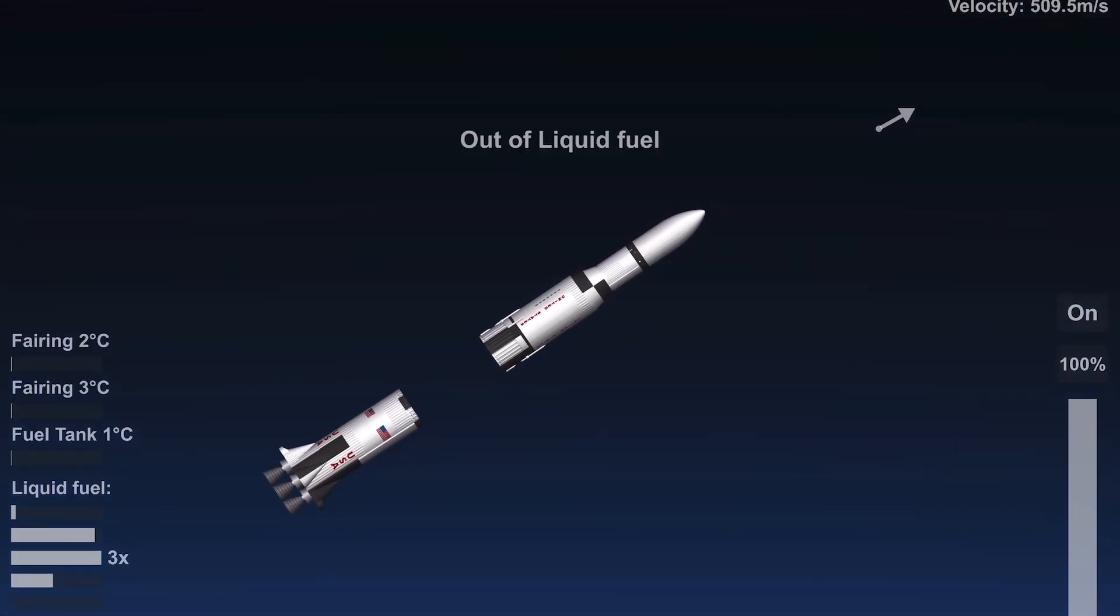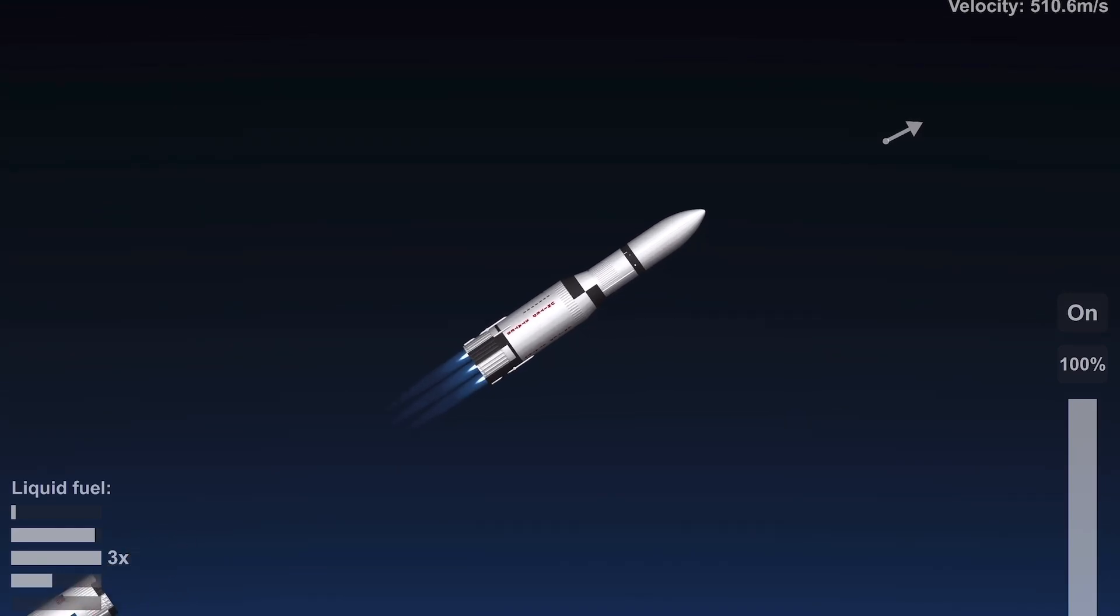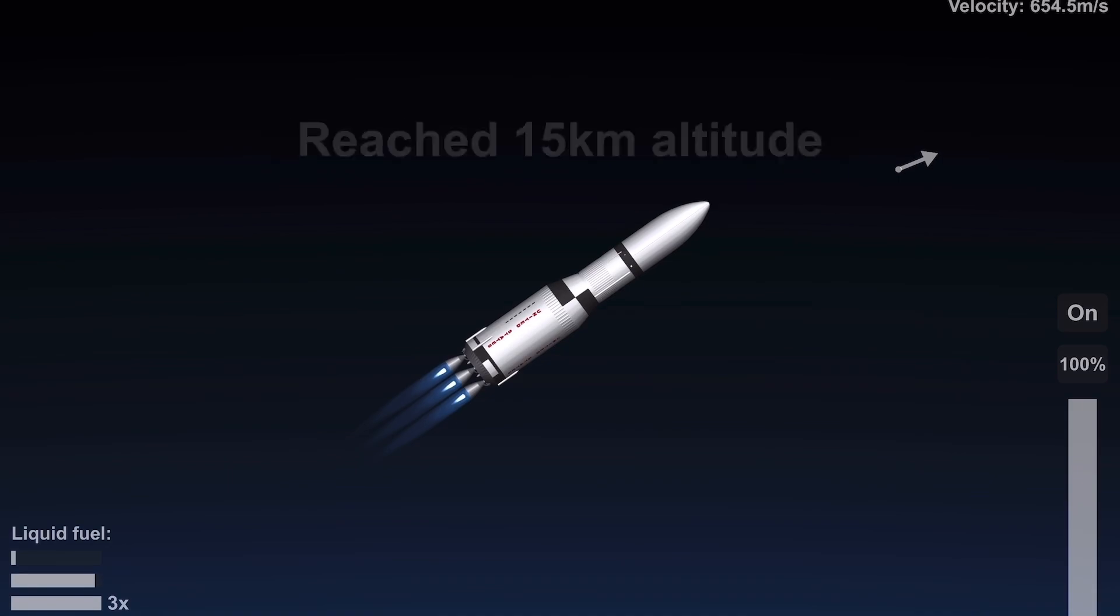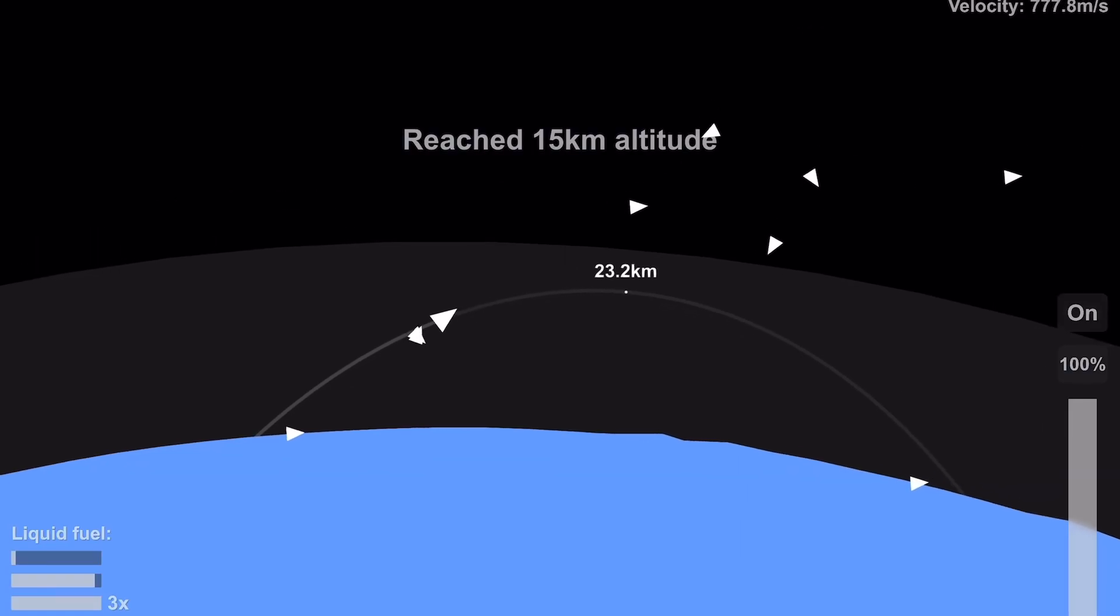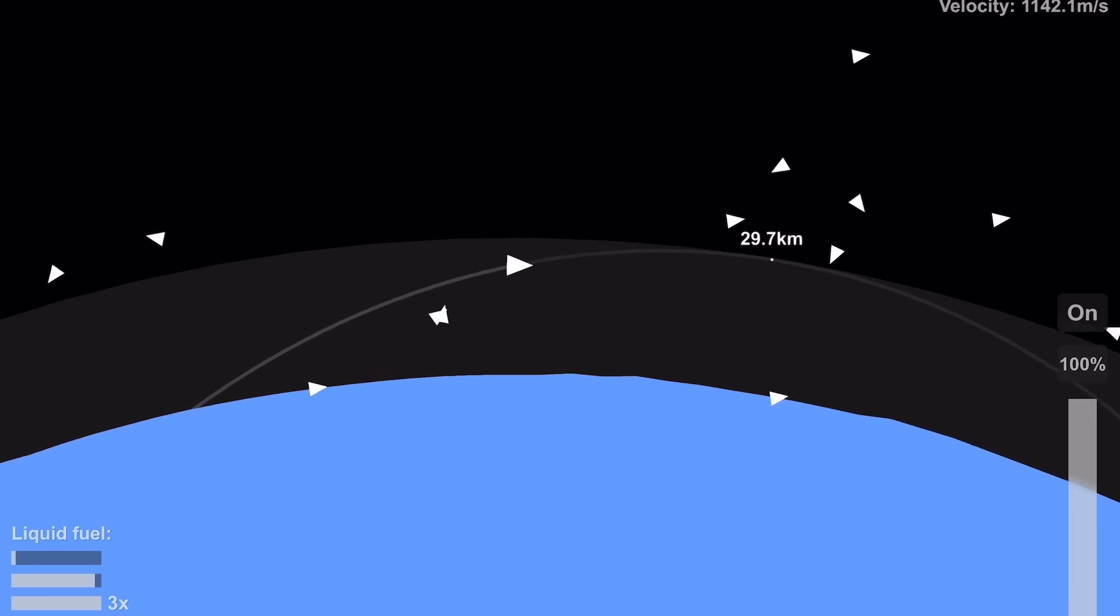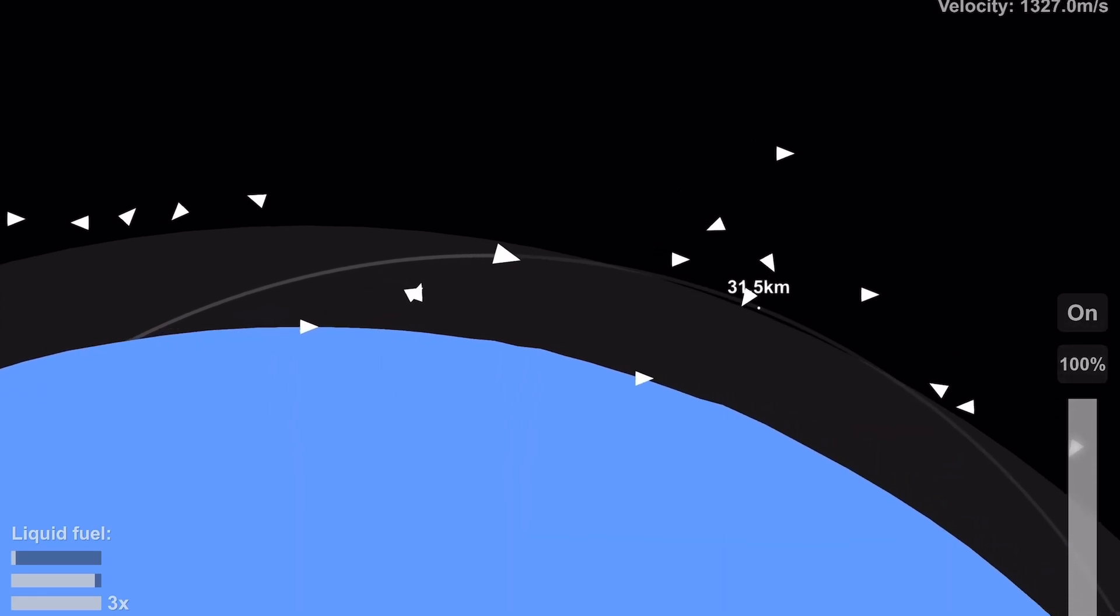So in today's video, as I mentioned before, we're launching a Saturn V to Saturn, but not just Saturn, because we can't just land this thing on Saturn, because Saturn doesn't have a surface. We will send this Saturn V to one of Saturn's moons, Titan, because Titan is, let's be honest, Titan's a super cool moon.